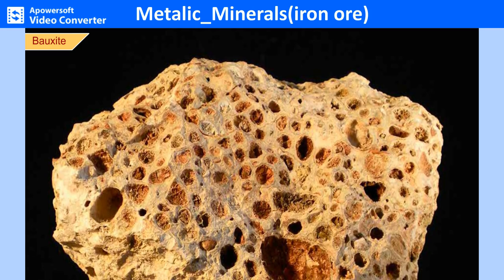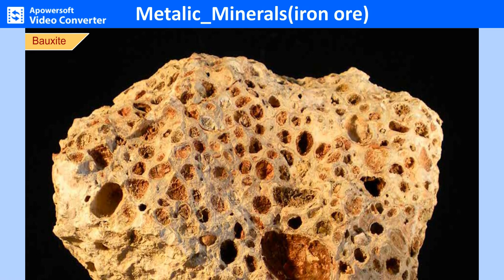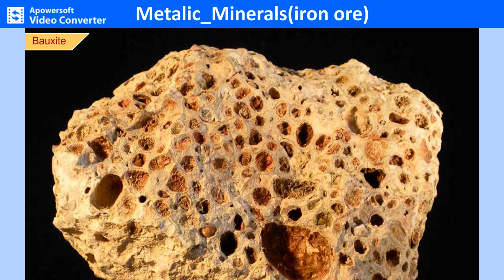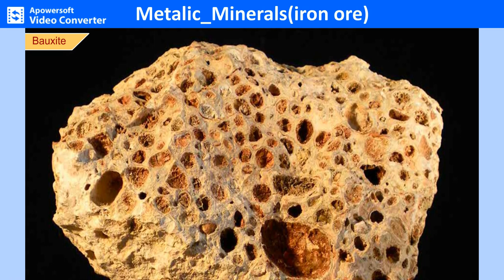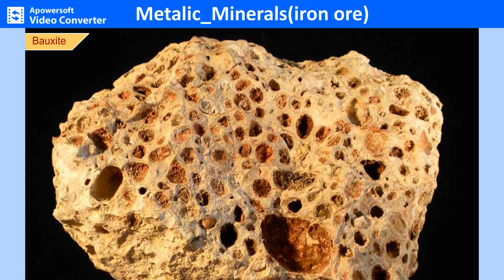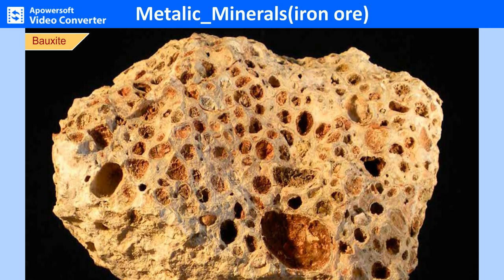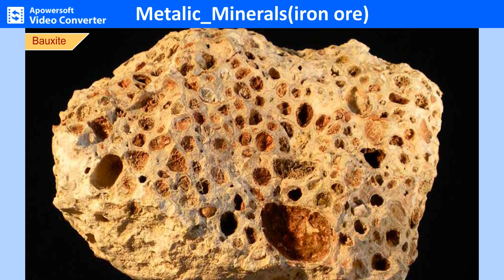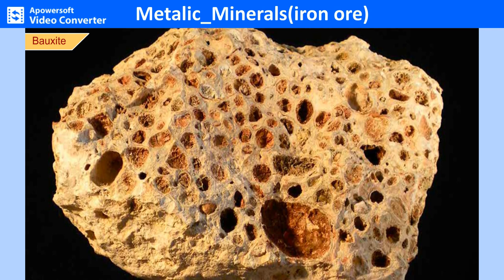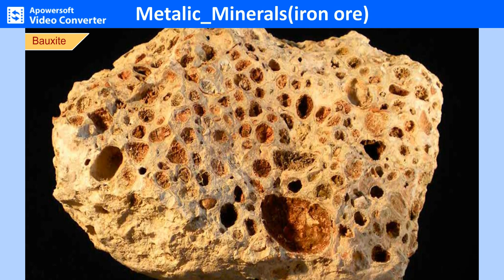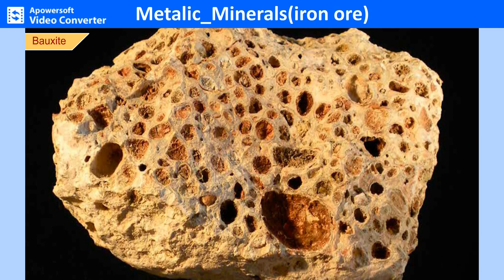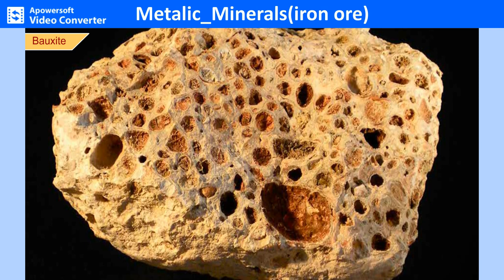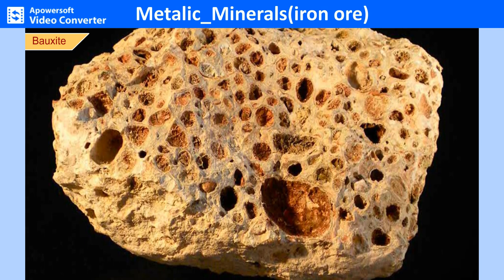Bauxite is a sedimentary rock and the principal ore of aluminium. It varies physically according to its geologic origin — some deposits are soft and easily crushable, while others are hard and dense. Its color may be white, yellow, grey or red. Bauxite is mostly used in manufacturing aluminium, cement, blast furnaces, iron and steel ladles, soda cans and other aluminium products. Bauxite is found in most countries, with leading producers being Australia, Brazil, China, Guinea, Russia, India and Jamaica.